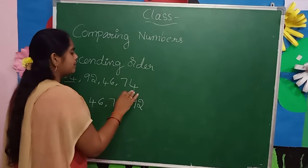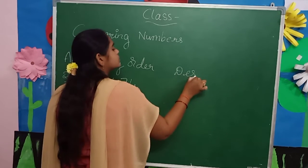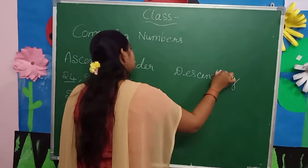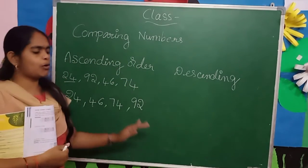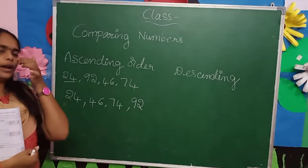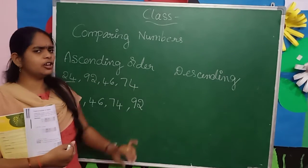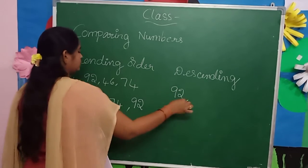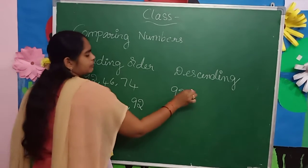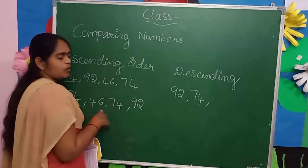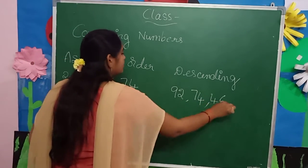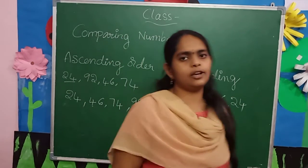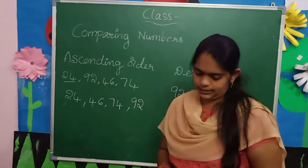Now the same numbers in descending order. Descending order is big number to small number. That means: ninety-two, next seventy-four, next forty-six, next twenty-four.